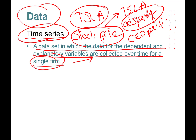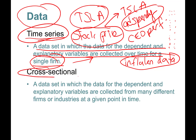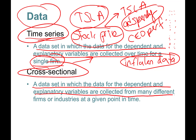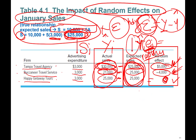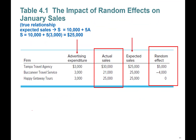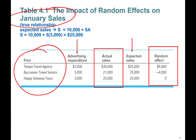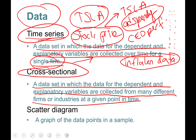Another example is inflation data for one country — USA inflation over some period of time with monetary policy variables. Cross-sectional data is a dataset in which data for the dependent and explanatory variables are collected from many different firms and industries at a given point in time — just like our January sales example with multiple agencies and their advertising expenditure and sales data.